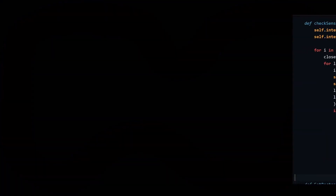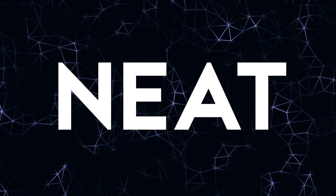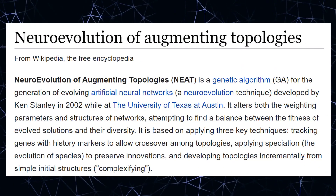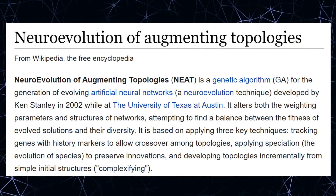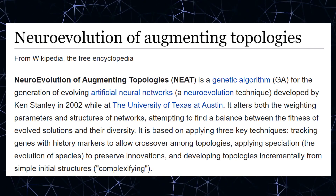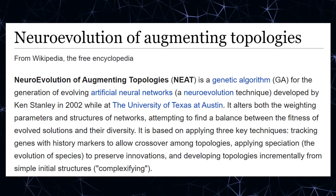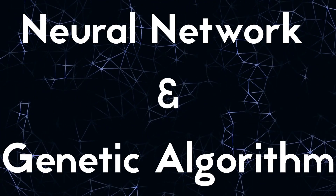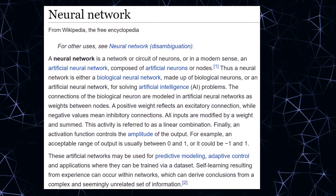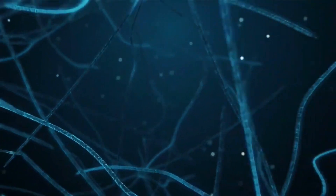The only thing left to do is to implement the NEAT algorithm. What is the NEAT algorithm? NEAT stands for Neuro Evolution of Augmented Topologies. It is a method for evolving artificial neural networks with a genetic algorithm. NEAT implements the idea that it is most effective to start evolution with small, simple neural networks and allow them to become increasingly complex over generations. It's basically a combination of neural networks and the genetic algorithm. A neural network is a series of algorithms that endeavours to recognize underlying relationships in a set of data through a process that mimics the way the human brain operates.